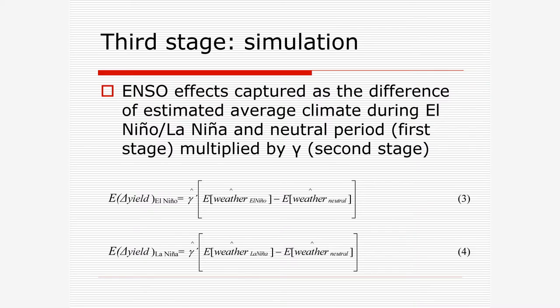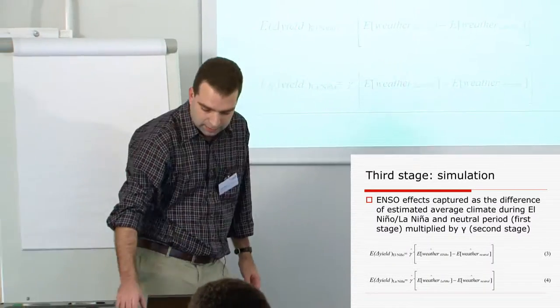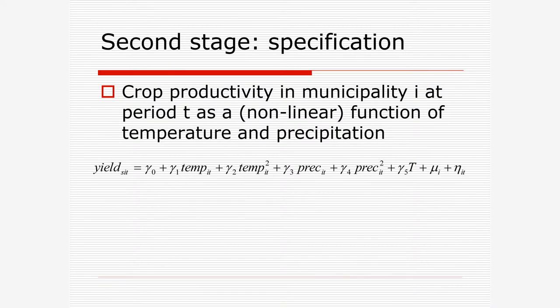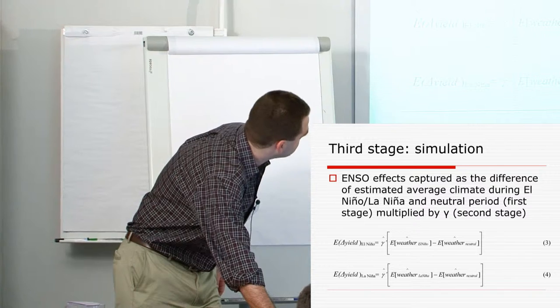Once we have this, we can simulate and evaluate the effects of the expected changing yields due to El Niño and La Niña. What we do is simulate the expected temperature in El Niño, the first phase, minus the expected temperature during the neutral phase. So we have, for example, the temperature or precipitation variation attributed to El Niño range. Since we say that the yield responds according to gamma, we just use these gammas to see how yields will respond to the variations attributed to El Niño and to La Niña. So that is the simulation strategy that we use to identify the El Niño and La Niña effects.